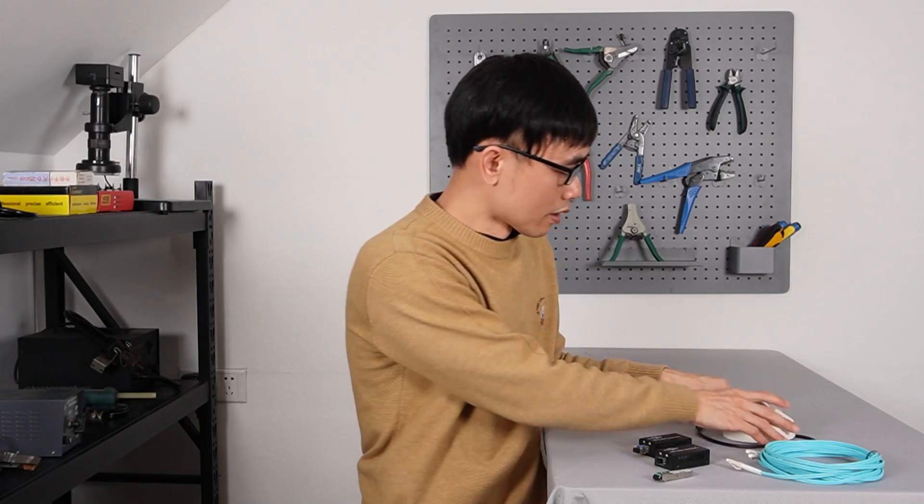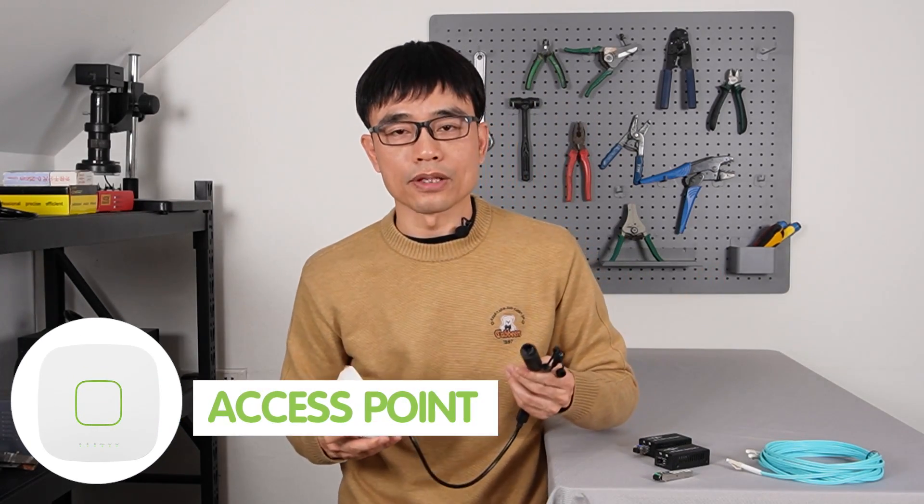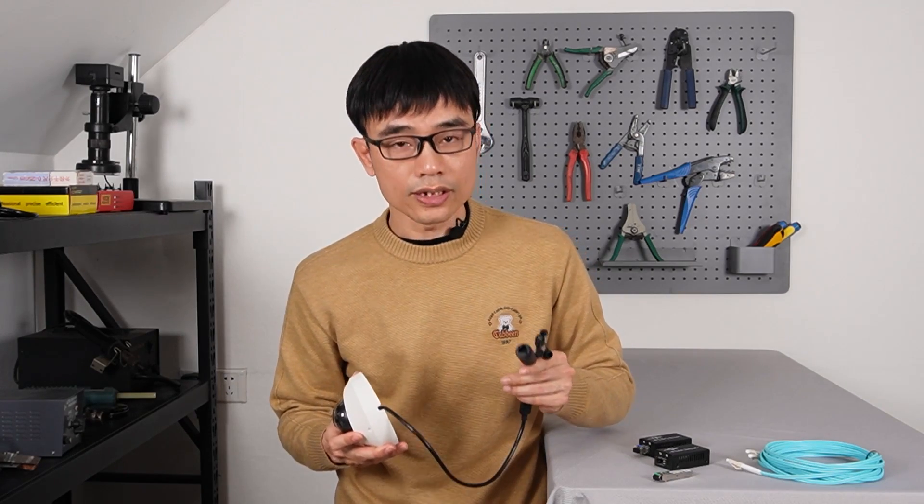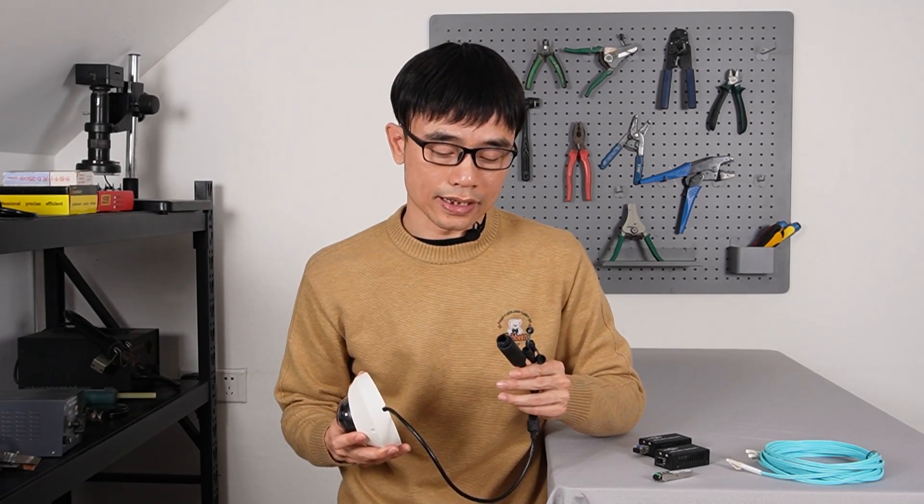First, let's see what we need for a typical fiber optical system. Most network devices like IP cameras and access points don't accept fiber optical connections directly. They only can take in Cat5 or Cat6 Ethernet cable.